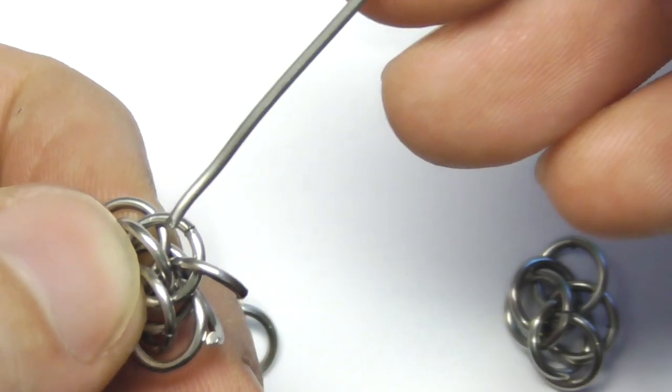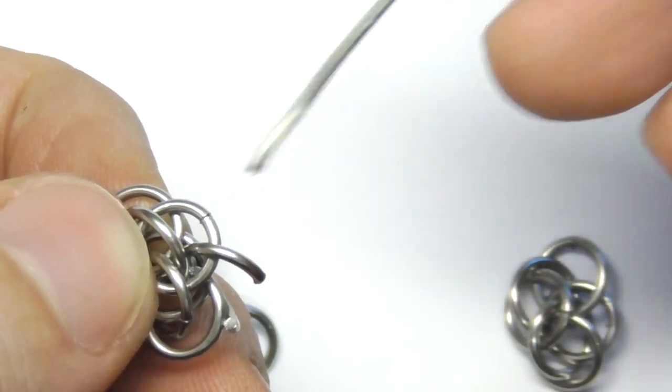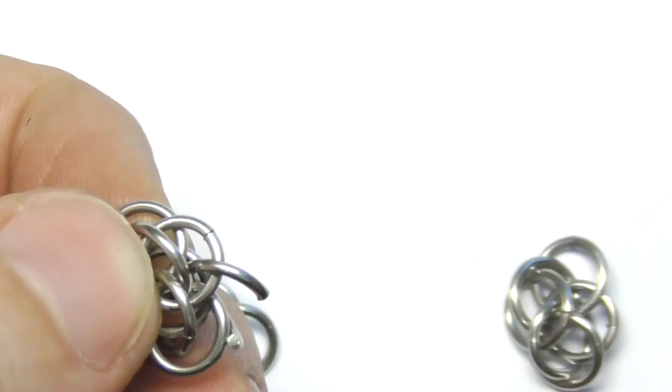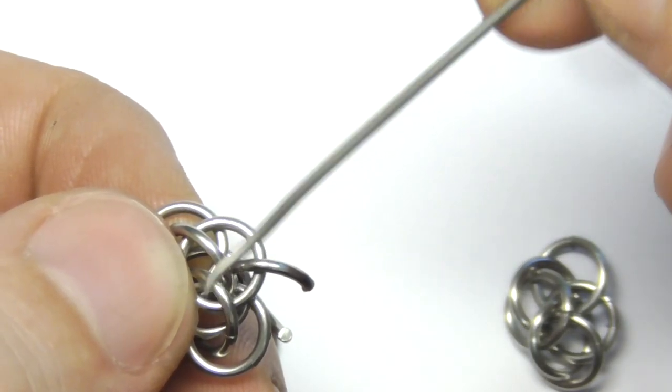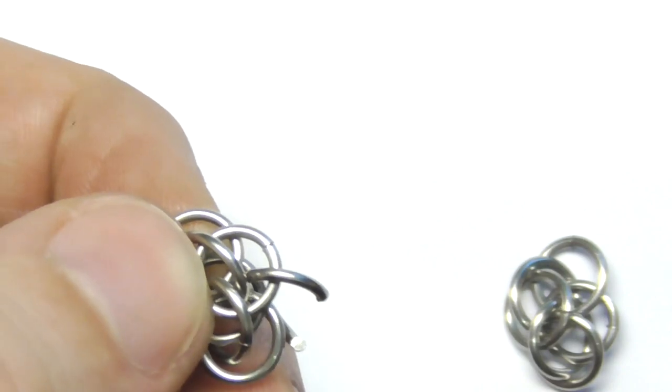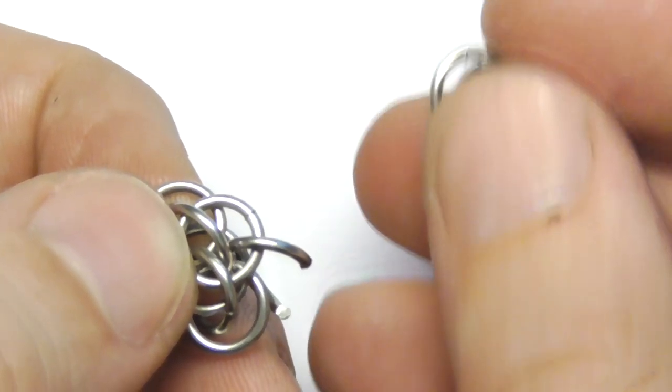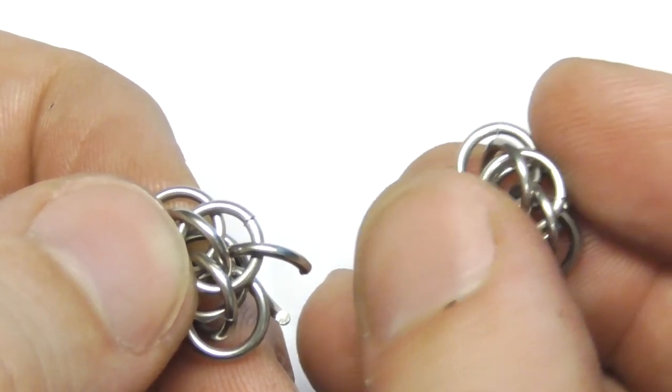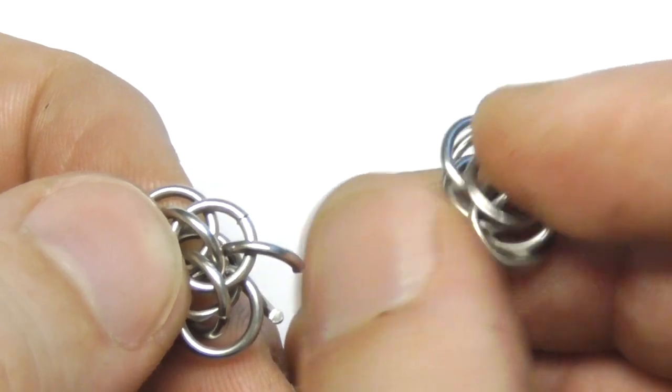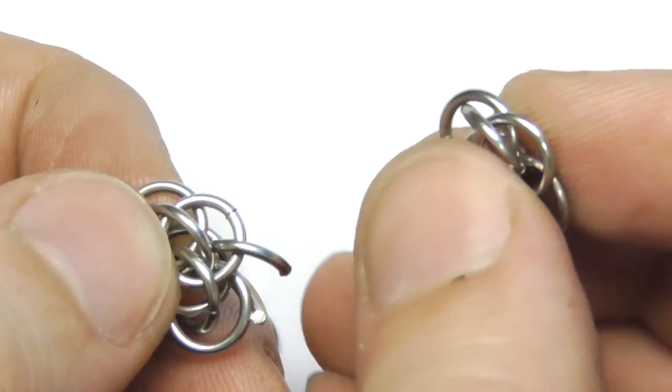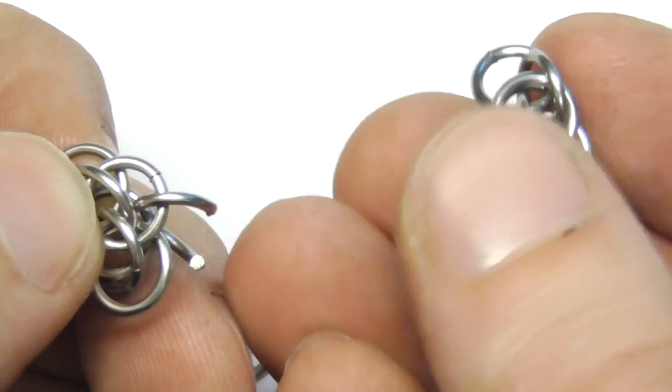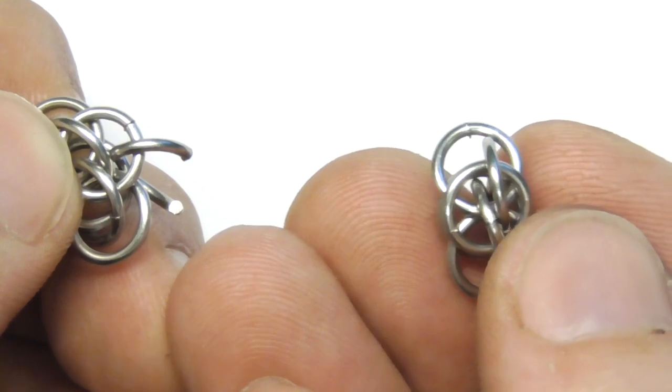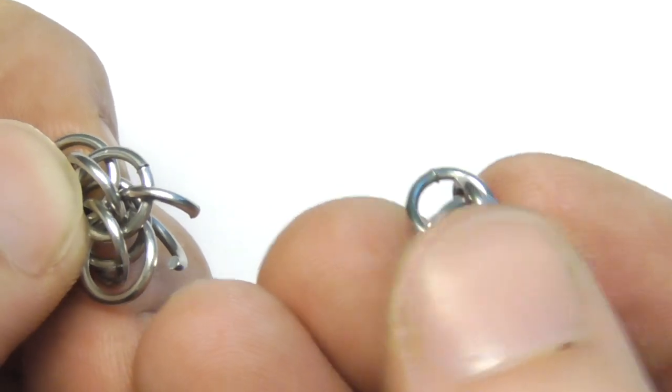So these two rings. This one and this one. At each element, these rings should be positioned the same way. Not right. And this is right way.